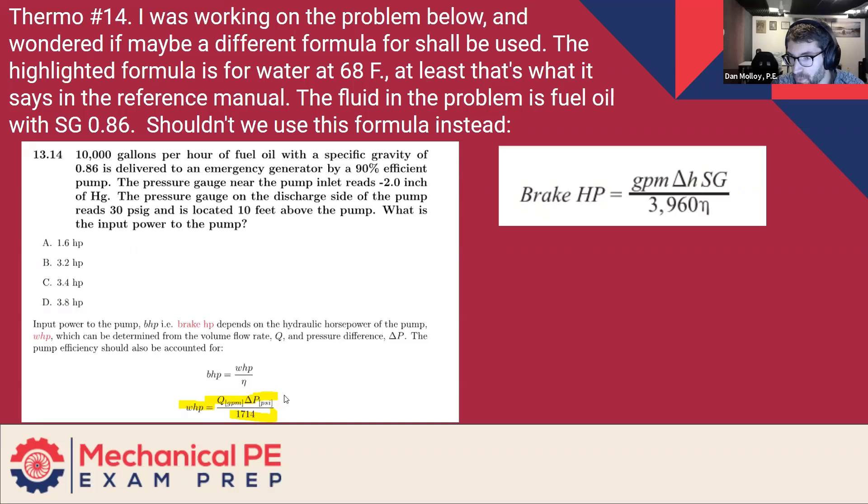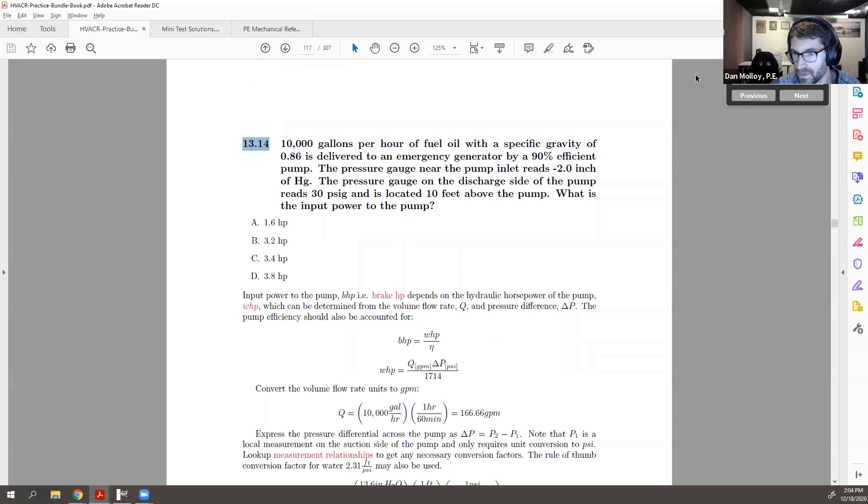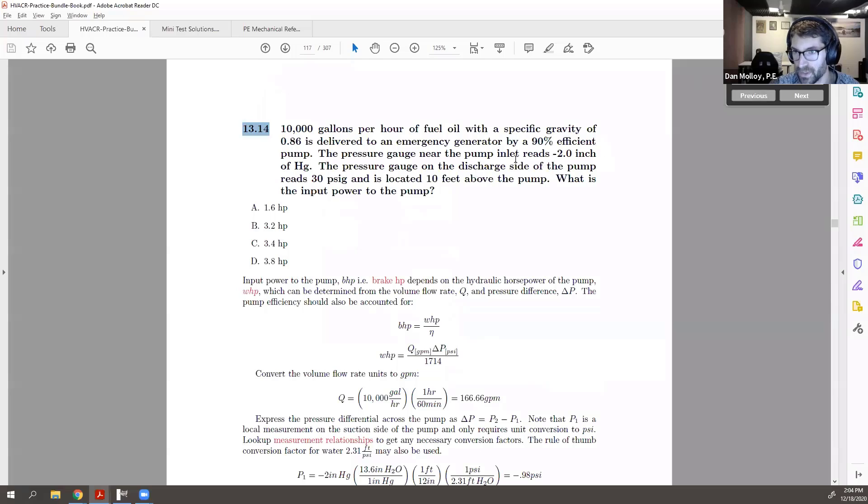And the reason why we would use this instead, using the one that has the delta H in specific gravity, is to correct for the height of a water column. So I want to talk about the specific problem so we don't get caught in talking about generalities. So this is 13.14.